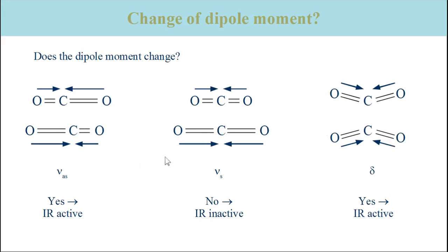In the symmetric stretching vibration, the dipole moments of the individual CO bonds have the same magnitudes at all times. As they have opposite directions, the resulting total dipole moment is zero at all times. This vibration is infrared inactive, which means that it does not absorb infrared light.